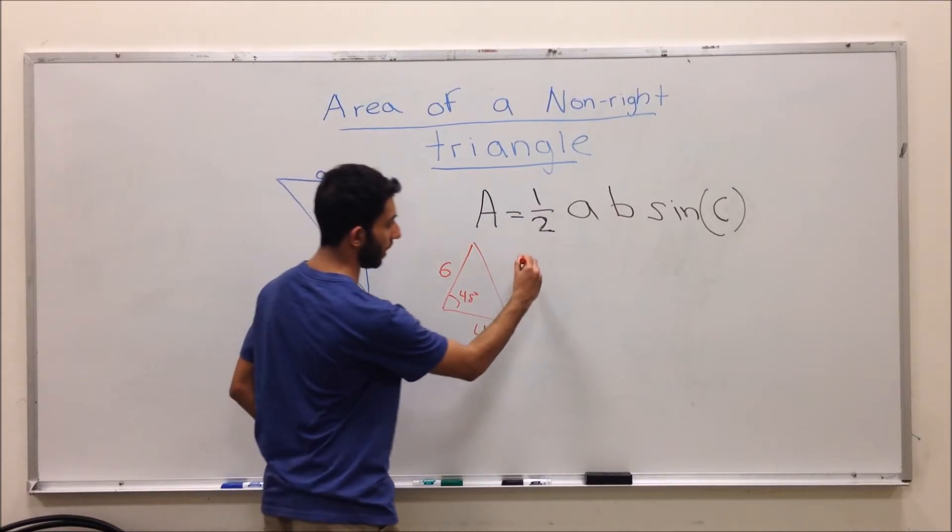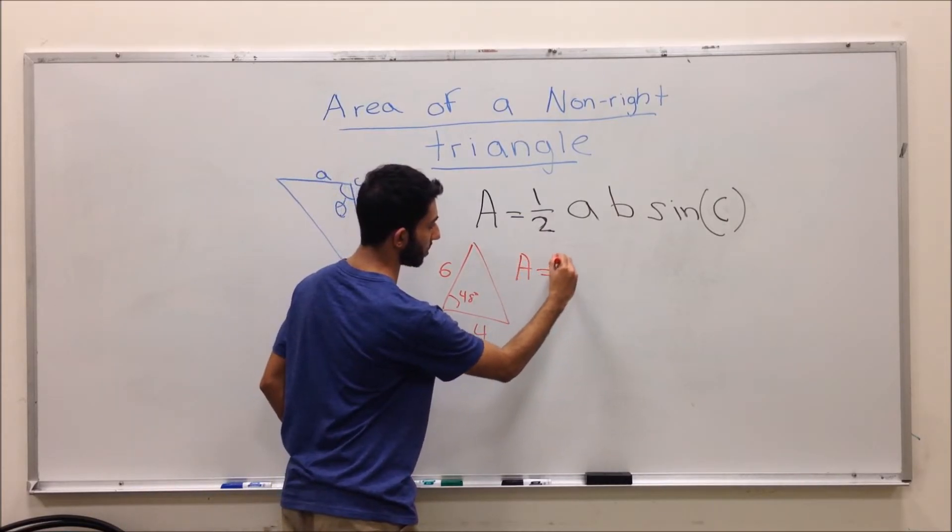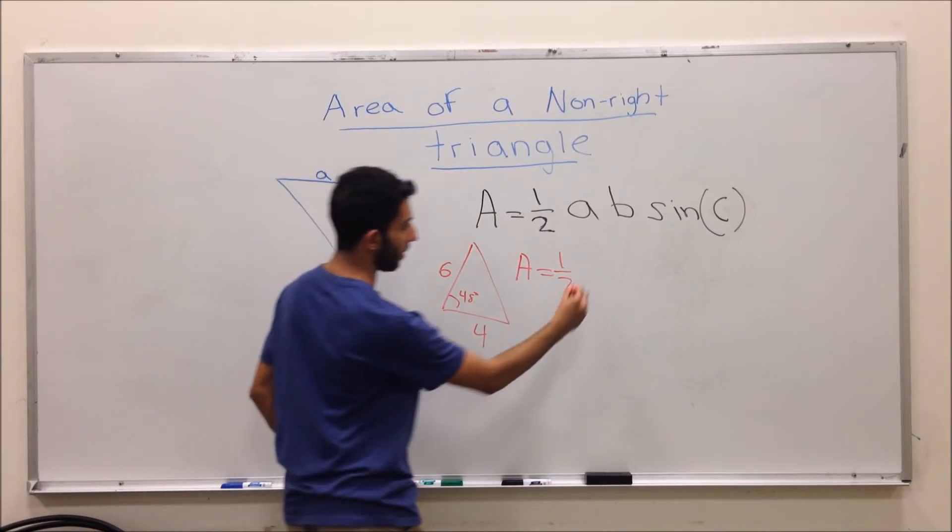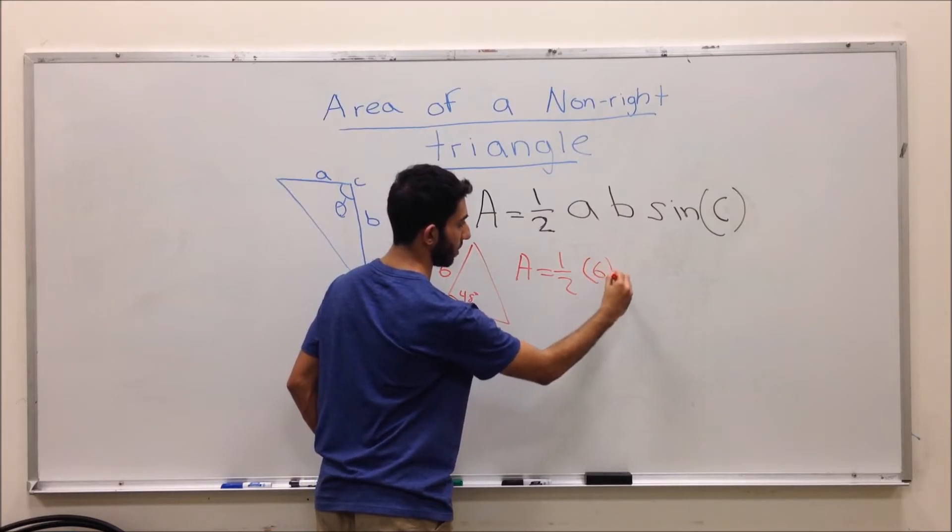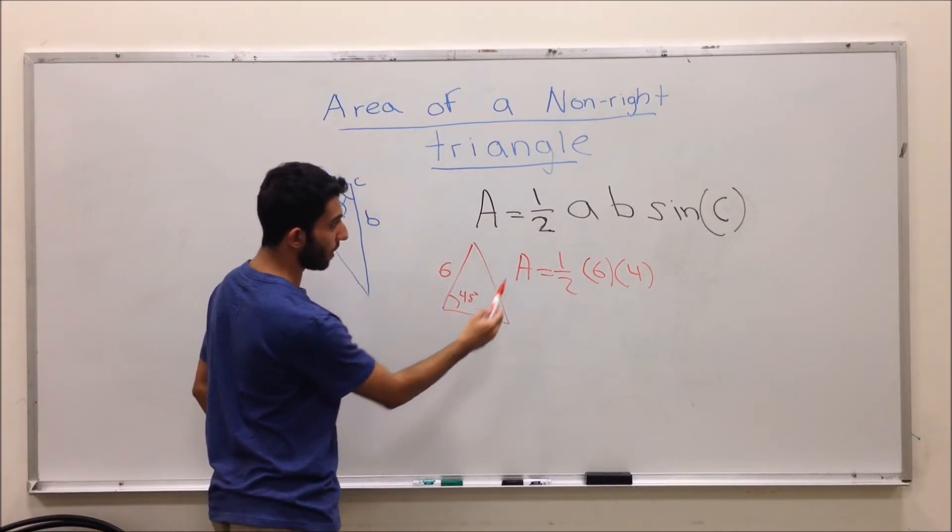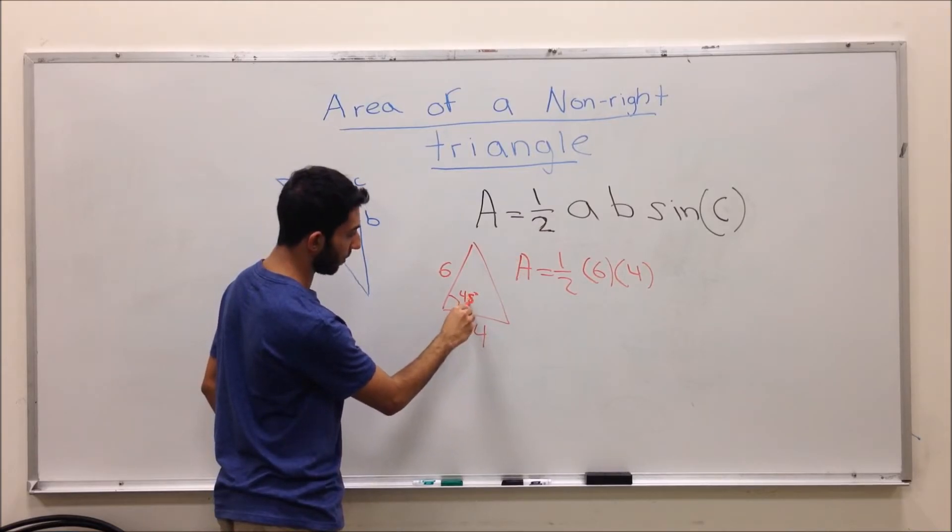Here you will do area equals one-half. The two sides that you were given were 6 and 4. You take the sine of the middle angle, which is 45 degrees.